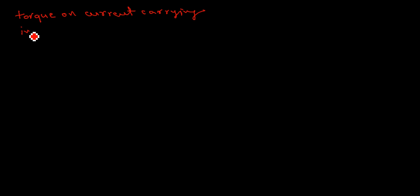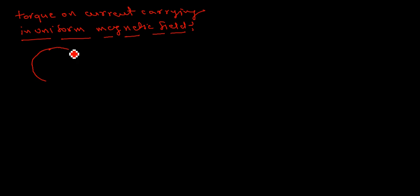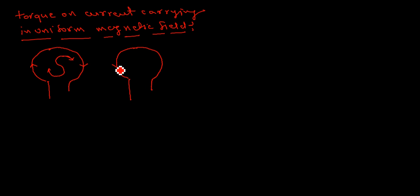Today we will discuss torque on a current-carrying coil in a uniform magnetic field. First of all, we must understand what a current-carrying coil is exactly behaving like. If there is a current-carrying coil with clockwise current direction, it will behave like the south pole. And if the current is anticlockwise, it will behave like the north pole.